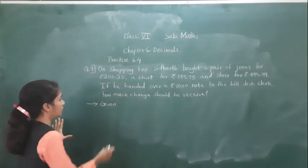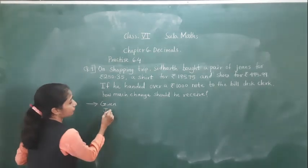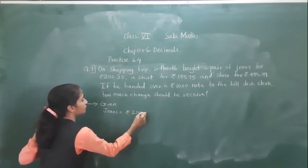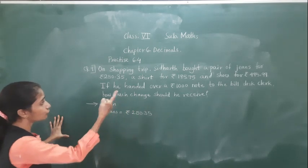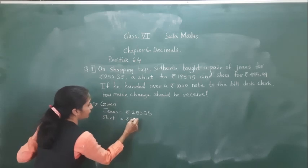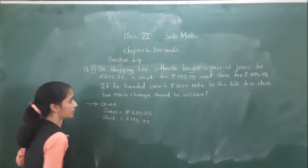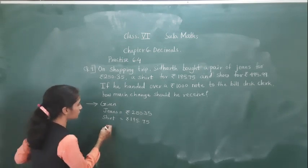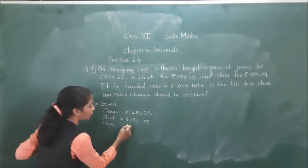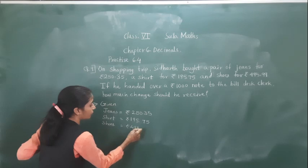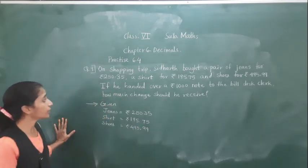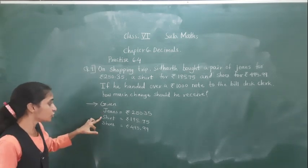A pair of jeans for rupees 250 and 35 paise. Shirt for rupees 195 and 75 paise. And shoes for rupees 495 and 99 paise. So he bought jeans, shirt, and shoes.